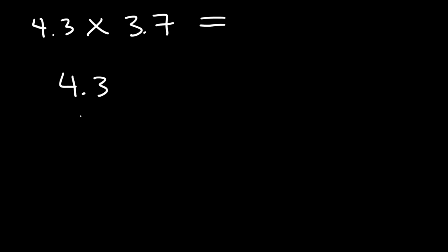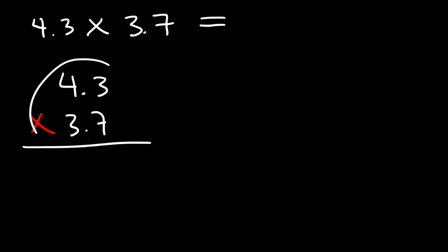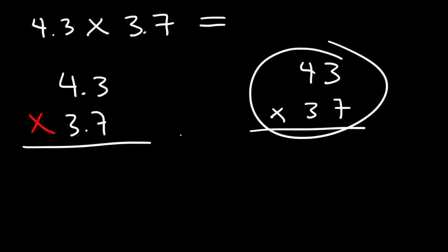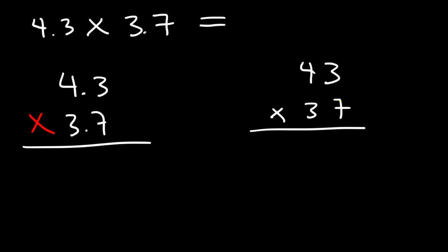Let's set up our problem and multiply it using the old school method. The way you would multiply these two numbers would be the same as if you're multiplying 43 by 37. So 3 times 7 is 21, so we write the 1 and carry over the 2. And then 4 times 7 is 28, plus 2, so that's going to give us 30.